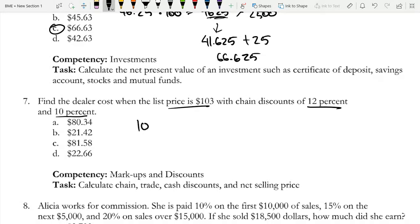So the list price is $103. Let me do some color coding. Again, if you're not familiar with chain discounts, we do have a video on this. You can check that. We have it on our website and also on YouTube.